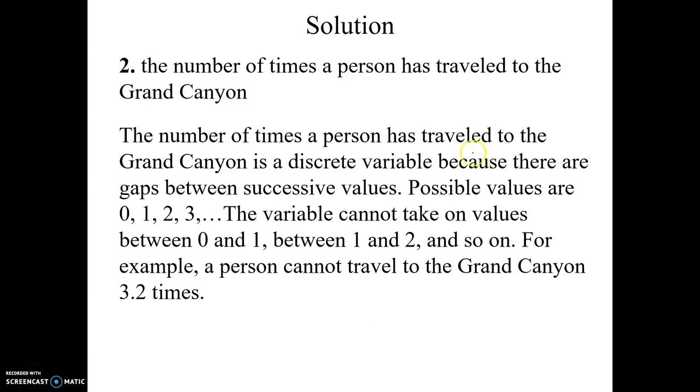The number of times a person has traveled to the Grand Canyon is a discrete variable because there are gaps between successive values. So between 0 and 1, there's a gap. You can't have 0.3 or 0.4. Between 1 and 2, there's a gap because you can't have 1.5 or 1.6. A person cannot travel to the Grand Canyon 3.2 times. Therefore, this is a discrete variable.